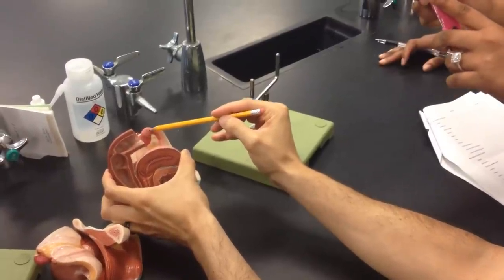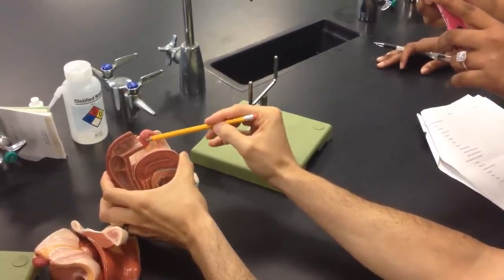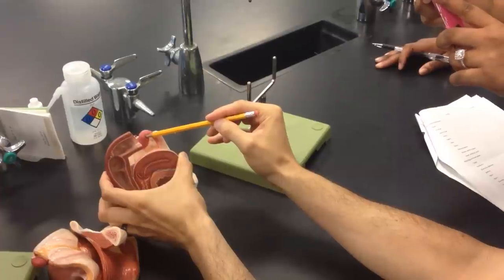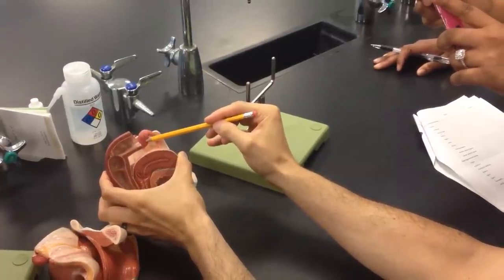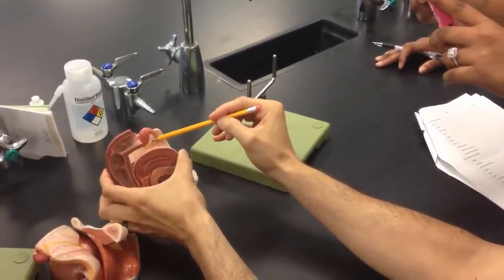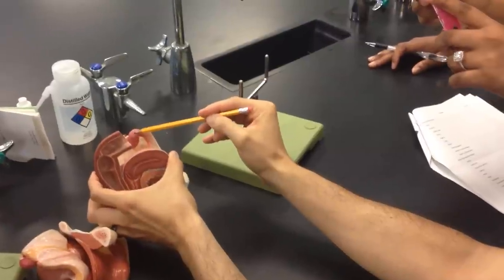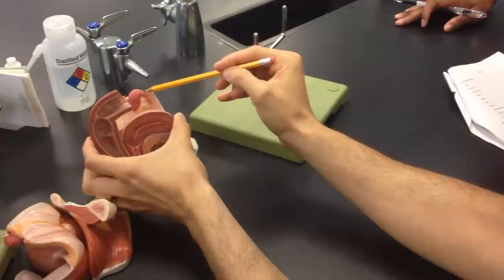On top of the ovary, on the uterine tube here, you have these little finger-like projections called fimbriae. Okay, so the fimbriae are going to help when the ovum expels the egg. It's going to feed into the uterine tube.